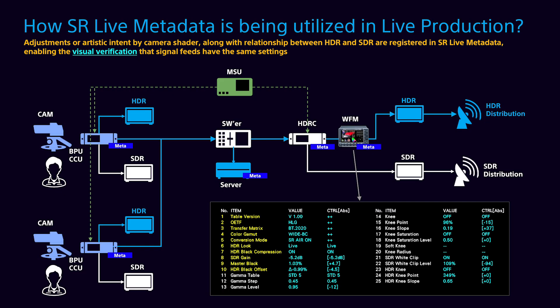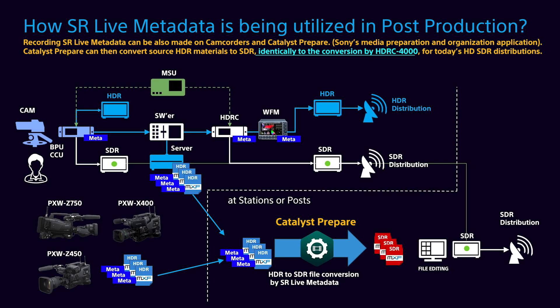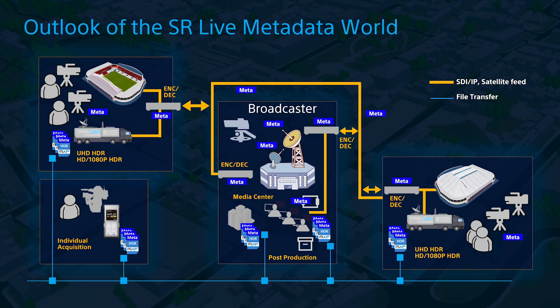This picture illustrates how the SR-Live metadata travels through the production pipeline, finally reaching the HDR-C4000 converter for visual verification of signal settings during live production. The recording of this metadata packet can also be made in our camcorders, permitting the processing of HDR recordings with our Catalyst Prepare editing application. With this information, Catalyst Prepare can replicate an SDR signal with identical image quality as that produced in our hardware-based HDR-C4000 converter. We envision an SR-Live metadata environment where the information can be created in remote locations and transferred to main broadcast and media centers, preserving exact knowledge of camera settings for future post-production operations.